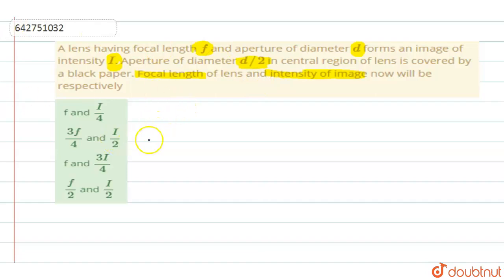If the aperture of diameter reduces to d/2, then what happens to area?